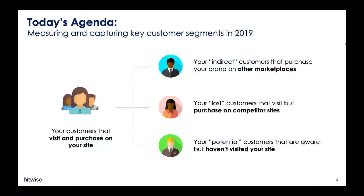The three segments we'll focus on are: indirect customers, those who buy products from your brand but from other marketplaces or vendors; lost customers, people who are visiting your site or searching for your brand but who end up purchasing or booking elsewhere; and lastly, potential customers, those who are aware of your brand but haven't actually taken the steps to visit or search for you.